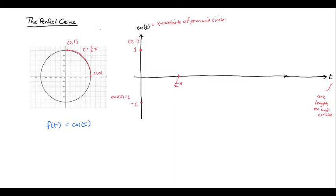At that point, since the x-coordinate of this point is 0, my cosine is going to be 0. So cosine of 1 half pi is going to be 0. So that is also a point on my graph.